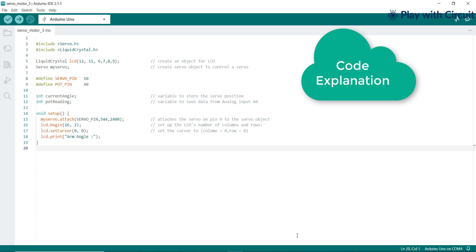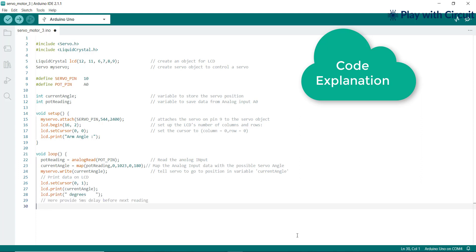In the Loop function, the analog reading from the potentiometer connected to pin A0 is stored in pot reading. The Map function scales the potentiometer reading from 0 to 1023 to servo angle range from 0 to 180.